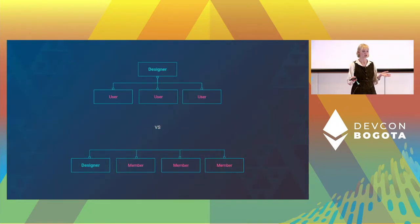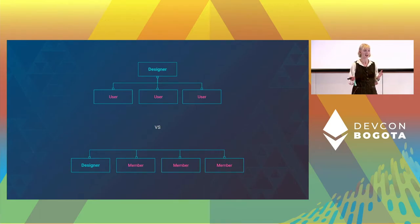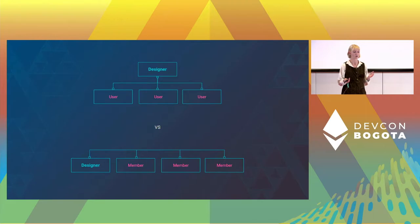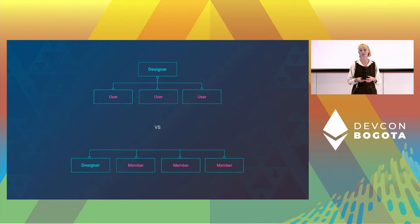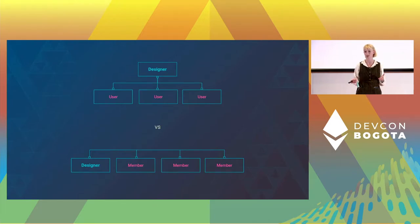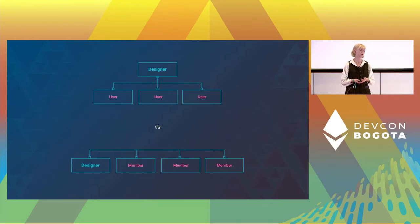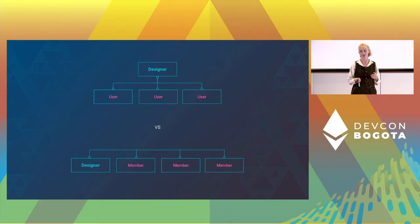I'm going to stop using the term 'users' for the rest of this talk because I think it sounds pretty detached. My hope for Web3 is that we can stop defining our community members by the lone fact that they use the product, and start to see them in the broader context of their complex lives and complex needs. So we're learning about people to better serve them with our digital products. Let's unpack those two methodologies.